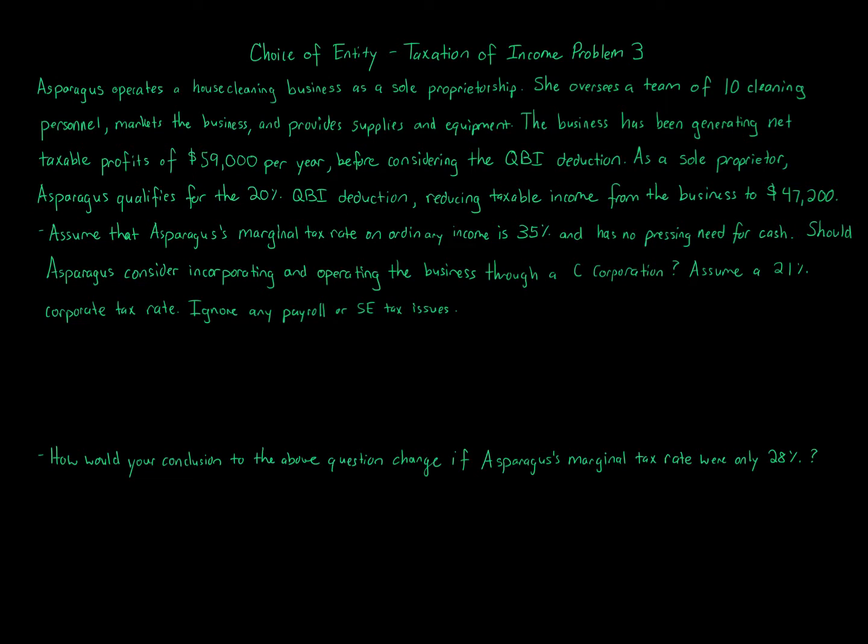Choice of entity, taxation of income problem 3. Asparagus operates a house cleaning business as a sole proprietorship. She oversees a team of 10 cleaning personnel, markets the business, and provides supplies and equipment. The business has been generating net taxable profits of $59,000 per year before considering the QBI deduction.